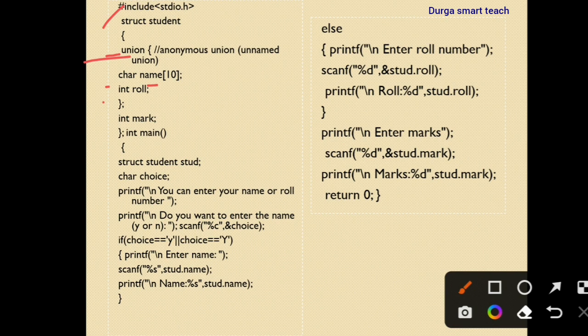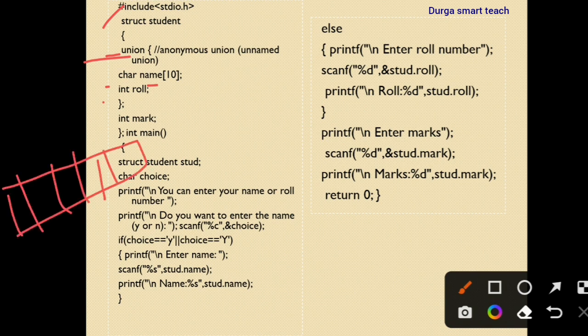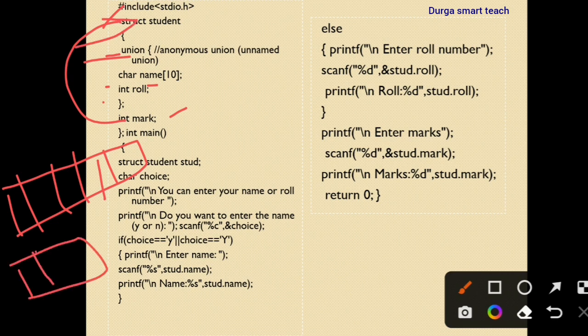The size of char name is 10 bytes and int has 4 bytes, so 4 bytes of memory is allocated for the union. Next, int marks is declared — this is a structure variable, stored in a separate memory location.